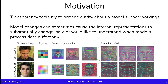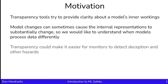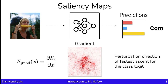Another high-level motivation is that transparency could make it easier for monitors to detect deception and other hazards that are revealed by looking at the model's internals. Let's now speak about saliency maps and their limitations. Saliency maps highlight portions of an input that try to explain what portions of the input are most salient for the output prediction. One possible saliency map is the gradient — we find the perturbation direction of fastest ascent to increase the class logit.